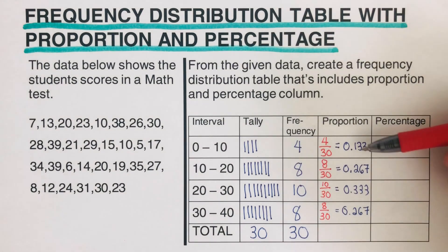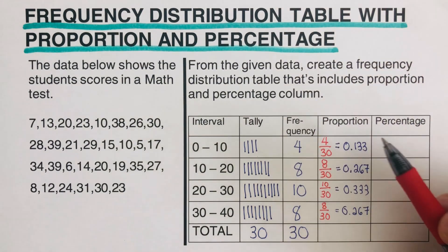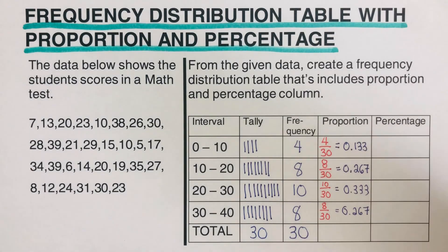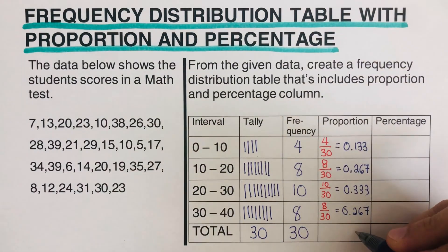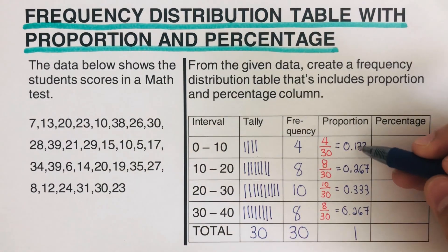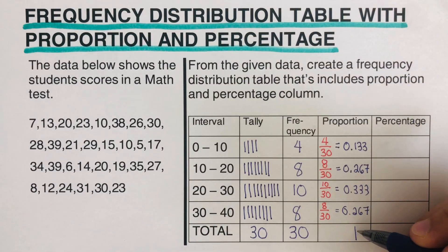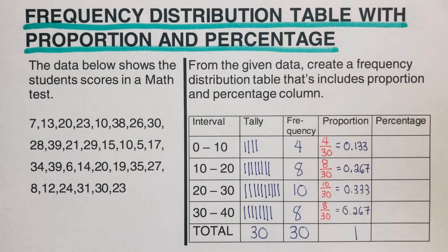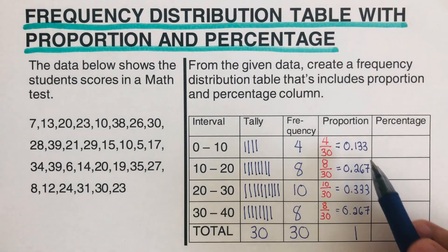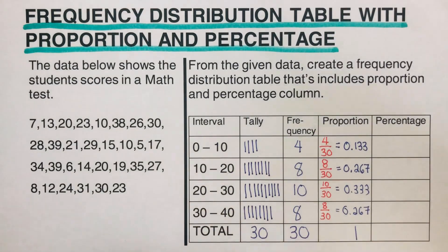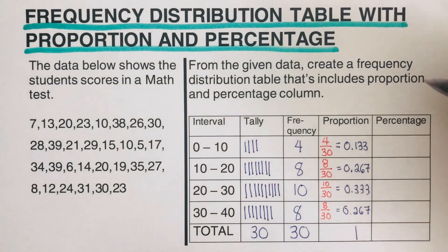Once all proportions are filled in, we add them all up. A key check: the total for the proportion column should always equal 1. If there's a small difference such as 0.99 or 1.01, that's due to rounding. But basically, the total for proportion should be 1.